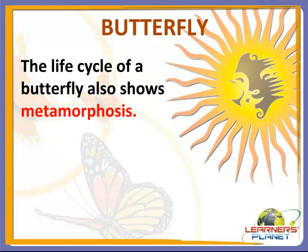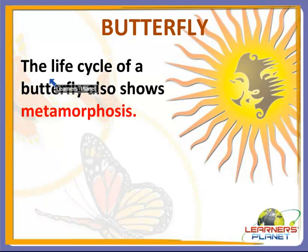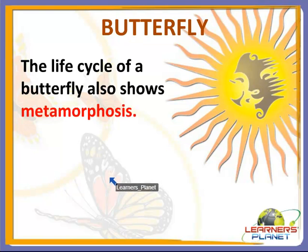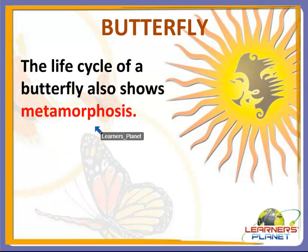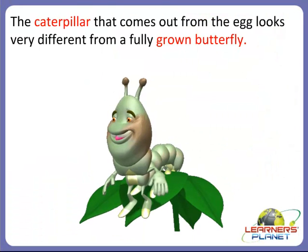Now we will study about another animal — the butterfly. Butterfly also lays eggs just like birds. The life cycle of a butterfly also shows metamorphosis. You can see the butterfly — a butterfly also shows metamorphosis, meaning they also undergo several changes before they become an adult, and that is why this process is called metamorphosis.